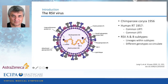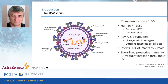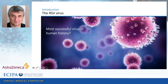There are different genotypes co-circulating within one season in the community. Most children will be infected early in life, but here's the problem: the protective immunity against it is short-lived, so we get frequent reinfection throughout life. It's not only a childhood disease — it's also a disease of adults and especially the elderly.